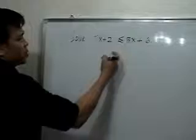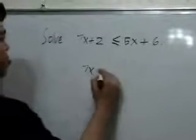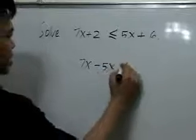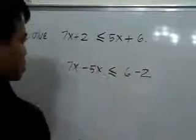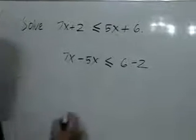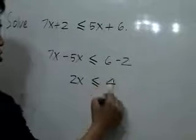Applying the addition property, we can write 7x minus 5x less than or equal to 6 minus 2. So 7x minus 5x is 2x less than or equal to 6 minus 2, which is 4.